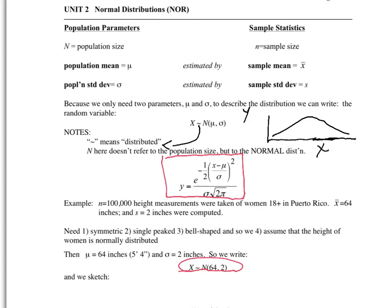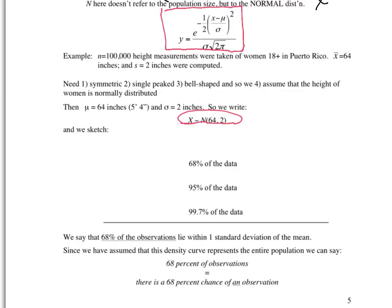In the space below, go ahead and sketch that. We can do this together. We're going to have a center at 64, and then we're going to mark one standard deviation. You have to make an equal width, two standard deviations, and three standard deviations. And then on this side,